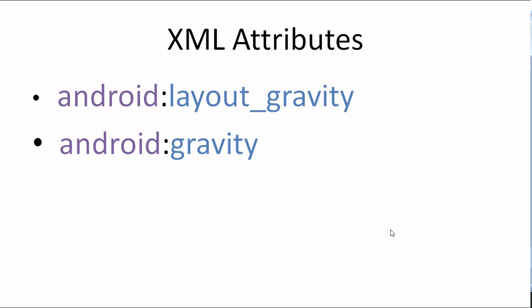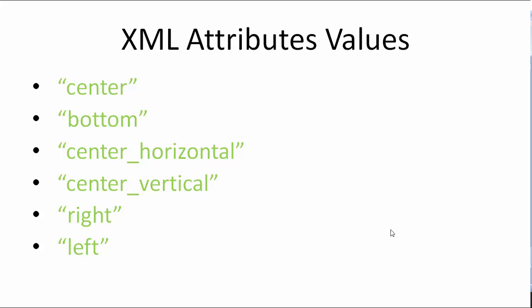The XML attributes are android:layout_gravity as well as android:gravity. Layout gravity positions the view itself at different locations on the screen, while android:gravity positions the content of the view at different locations inside a view. Here are a couple of values for both: center, bottom, center horizontal, center vertical, right, and left.